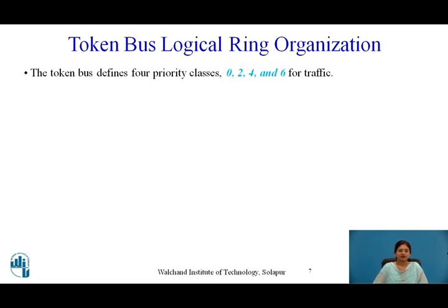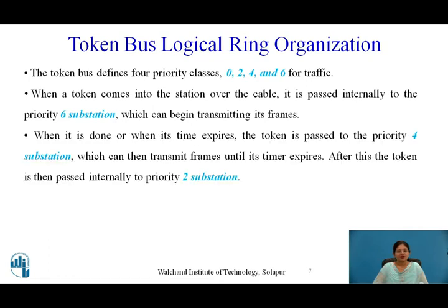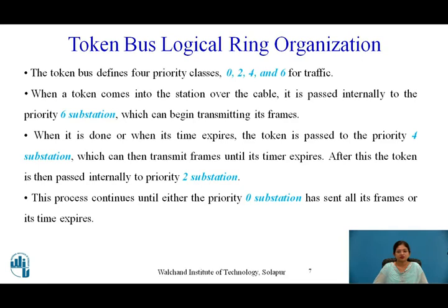The Token Bus defines four priority classes — 0, 2, 4, and 6 — for traffic control. When the token arrives at a station, it is passed internally to the priority 6 substation, which transmits its frames until done or its timer expires. The token then passes to the priority 4 substation, then priority 2, and finally priority 0, continuing until either all frames are sent or the timer expires.